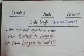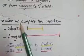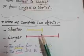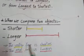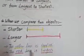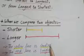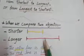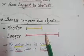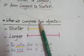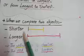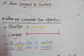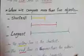We can compare two objects like this: two lines, yellow and red. The yellow line is shorter and the red line is longer. Shorter is the small one and longer is the larger or bigger one. When we are comparing between two objects, I have to put -er at the end of short and long.